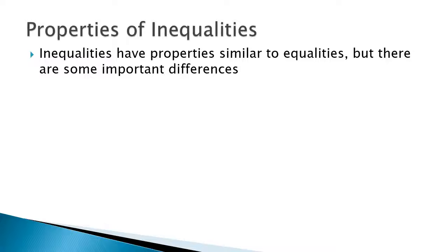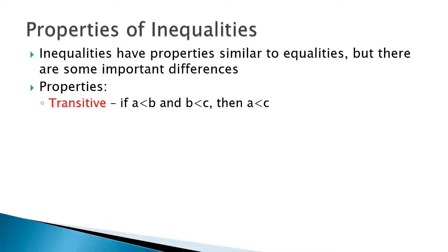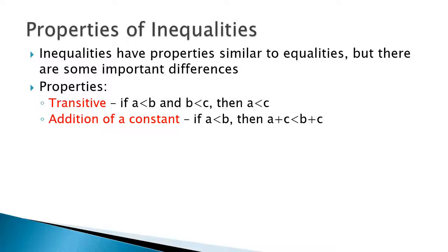Inequalities have properties similar to equalities, but there are some important differences. The transitive property works for inequalities too: if A is less than B and B is less than C, then A must be less than C. The addition of a constant still works. If you have an inequality — if A is less than B — adding the same number to both sides will still result in the left-hand side being less than the right-hand side.